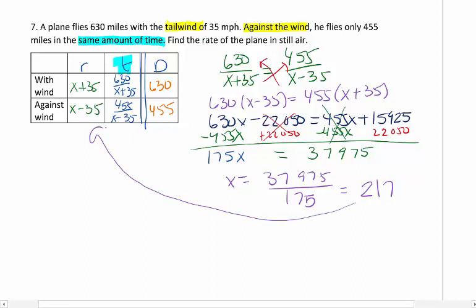Right off the bat, let's look back - what are we using? What are we asked for? X actually in this problem is what we want to find, which is the rate of the plane in still air. So my answer is 217 miles per hour.